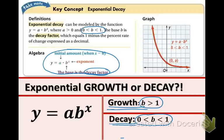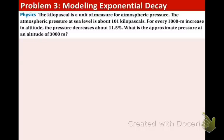Now we can see a real life application problem of exponential decay. The kilopascal is a unit of measurement for atmospheric pressure. The atmospheric pressure at sea level is about 101 kilopascals. For every 1,000 meter increase in altitude, the pressure decreases about 11.5%. What is the approximate pressure at an altitude of 3,000 meters? Like always, let's define our variables.